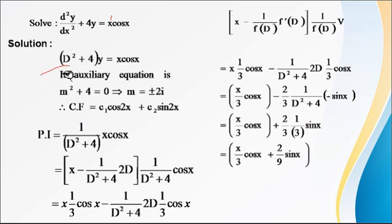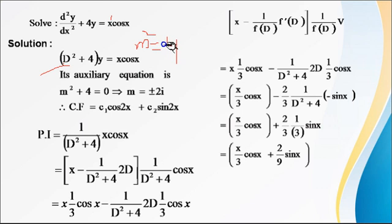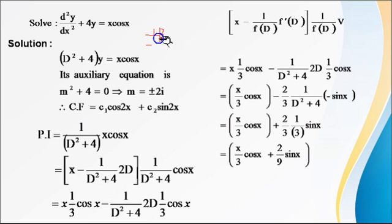So m² + 4 = 0 gives m² = −4, therefore m = √(−4) = ±2i. In case of ±βi, the complementary function (CF) is c₁·cos(βx) + c₂·sin(βx). Since β = 2, CF = c₁·cos(2x) + c₂·sin(2x).